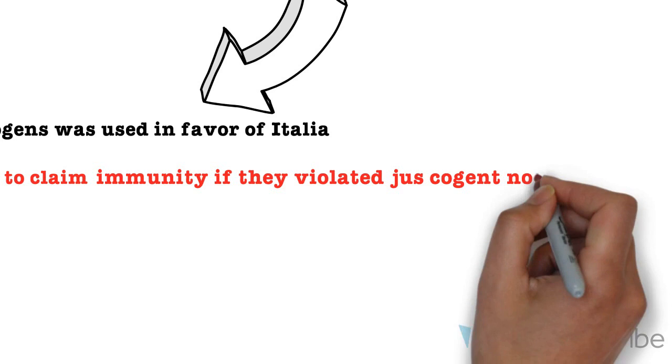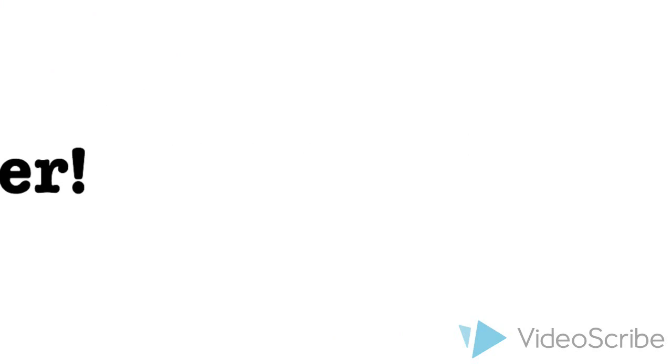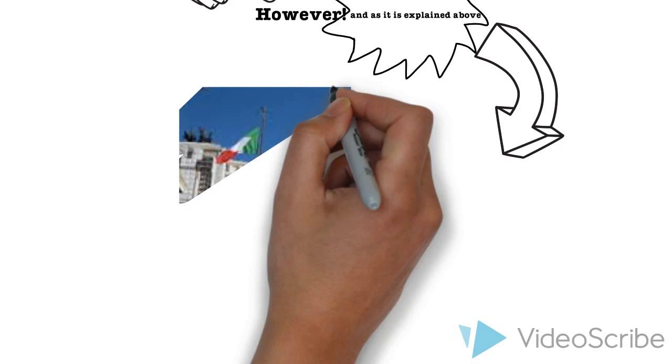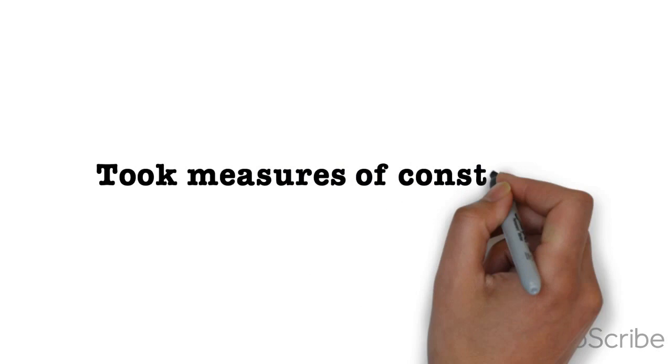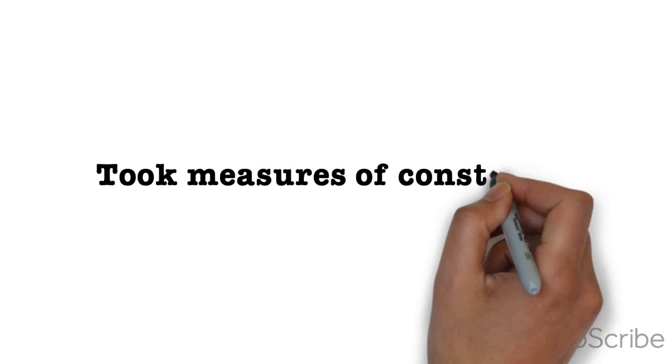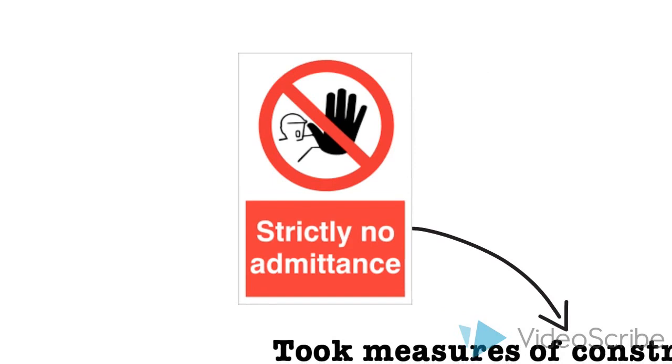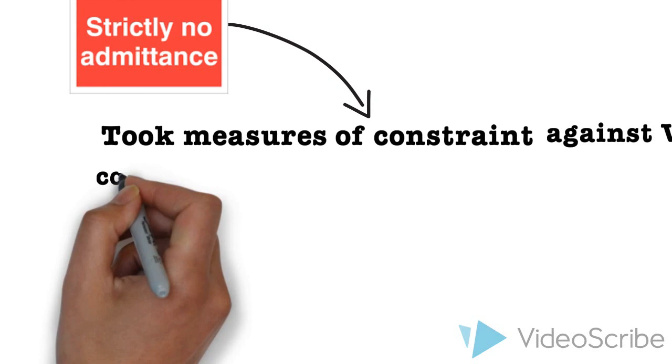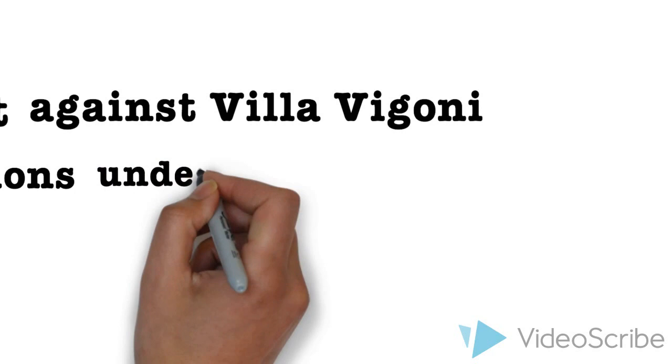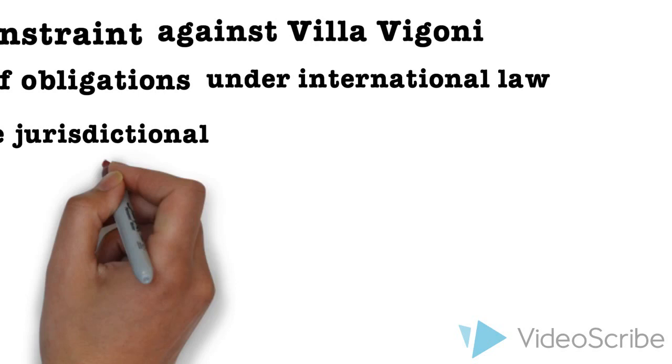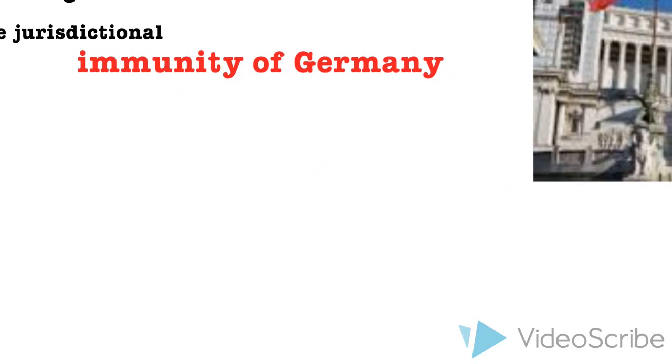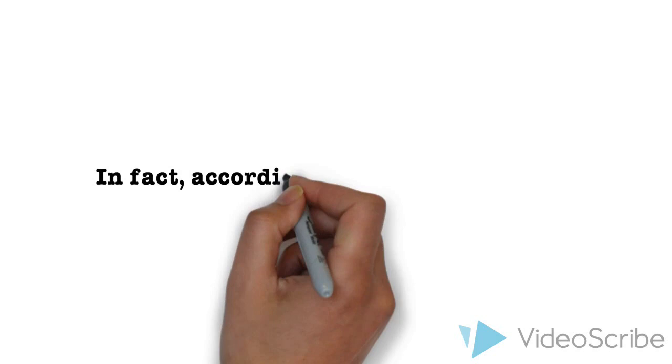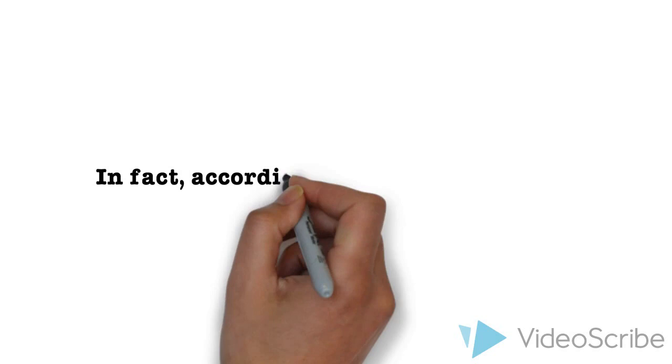However, as my colleagues already explained the facts of the case above, Italy committed violations of its obligations under international law. Italy has failed to respect the jurisdictional immunity which Germany enjoys under international law. By taking measures of constraint against Villa Vigoni, which is German state property, Italy committed violations of German jurisdictional immunity and thus violated German state sovereignty. According to international law, every state is absolutely immune from jurisdiction of foreign court without any exception, which means that Italy had no right to undertake such measures against Germany.